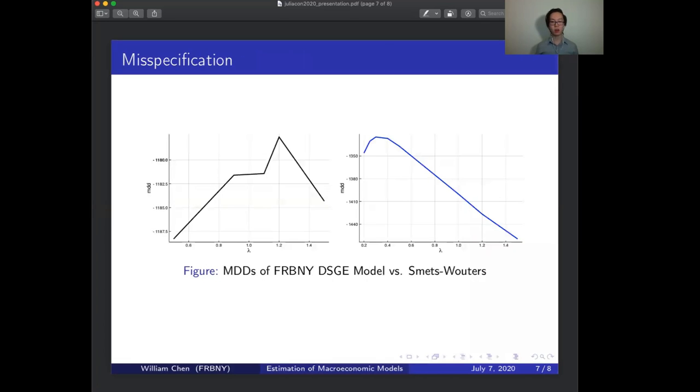As an example of using DSGE-VARs, on this slide I've plotted the marginal data densities of the FRBNY DSGE and a canonical DSGE called Smets-Wouters when they're estimated as DSGE-VARs. The fact that the MDD peaks at 1.2 for the FRBNY model and 0.3 for the Smets-Wouters model is an example of how lambda helps you conduct model specification. These two plots say that the parameter estimates which best explain the data relative to VAR are those obtained from estimating a DSGE-VAR with lambda equals 1.2 for the FRBNY model and 0.3 for the Smets-Wouters model. This also means that the FRBNY model is relatively more informative about the data than Smets-Wouters when you're comparing against the VAR because the best lambda is higher for the FRBNY model.